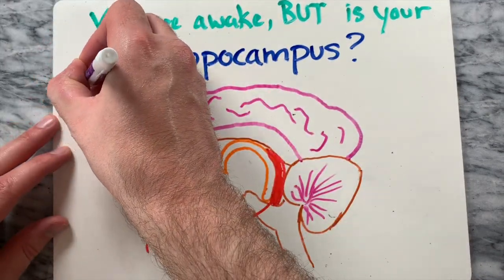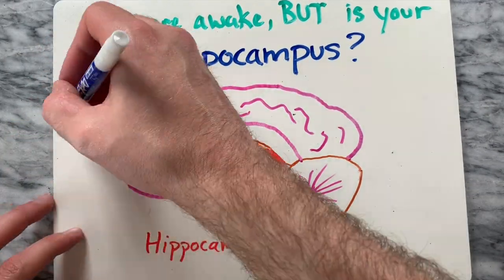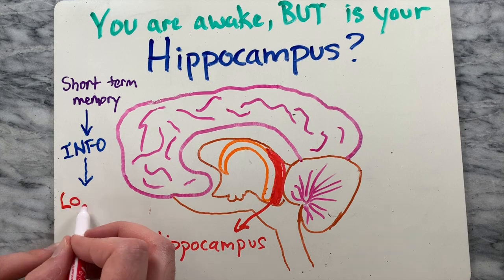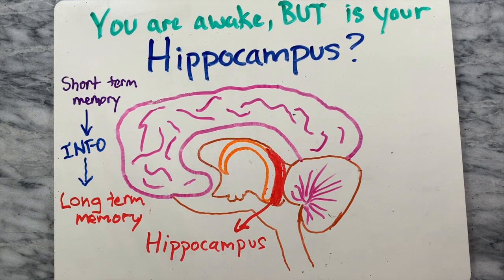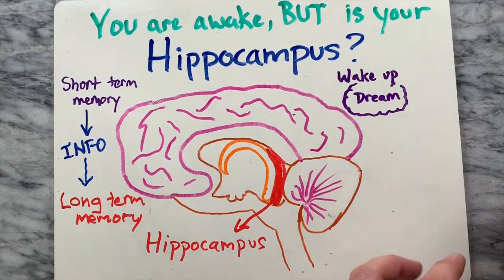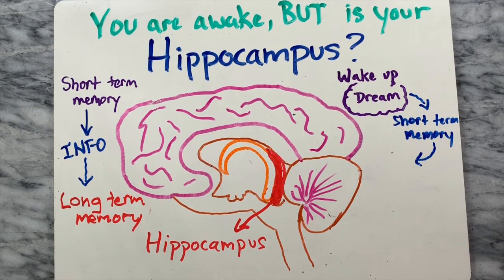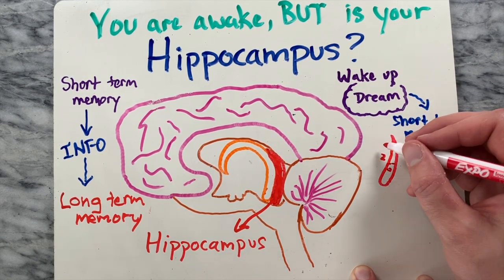It is responsible for moving information from short-term to long-term memory. So you could have this window where you wake up with a dream in your short-term memory, but since the hippocampus is not fully awake yet, your brain is not able to keep that memory.